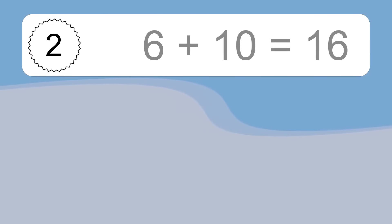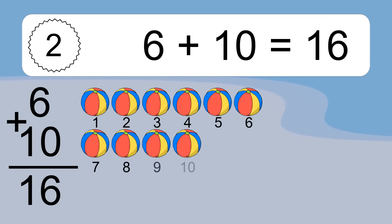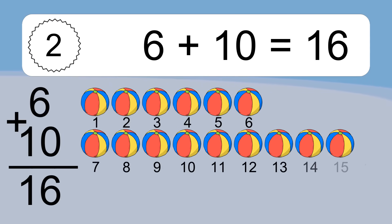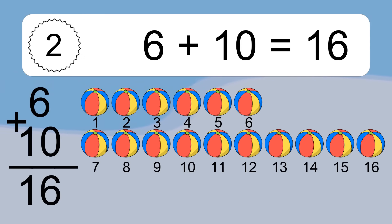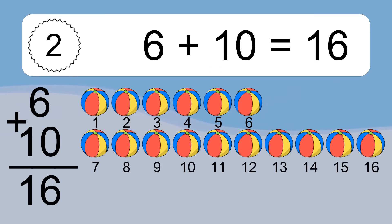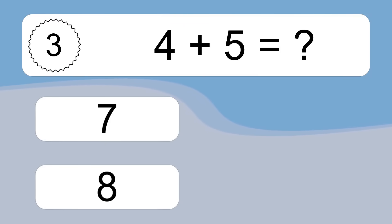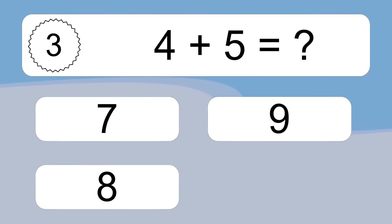6 plus 10 equals what? 6 plus 10 equals 16. Let's count it: 1, 2, 3, 4, 5, 6, 7, 8, 9, 10, 11, 12, 13, 14, 15, 16.